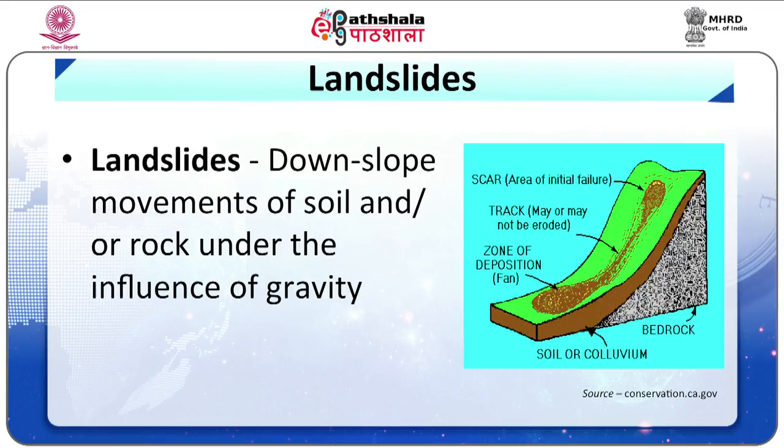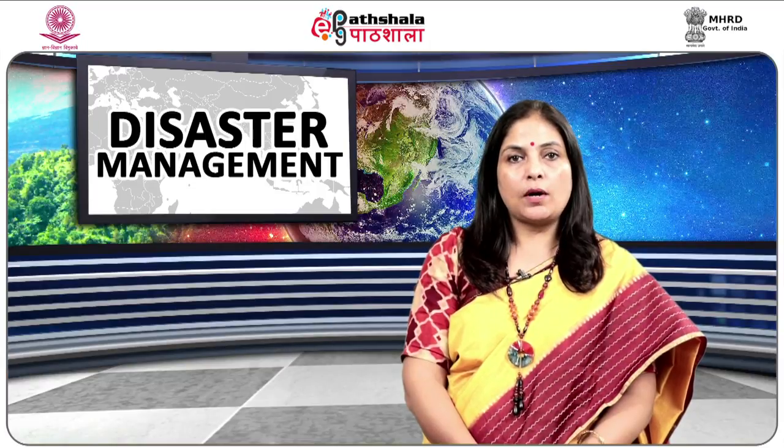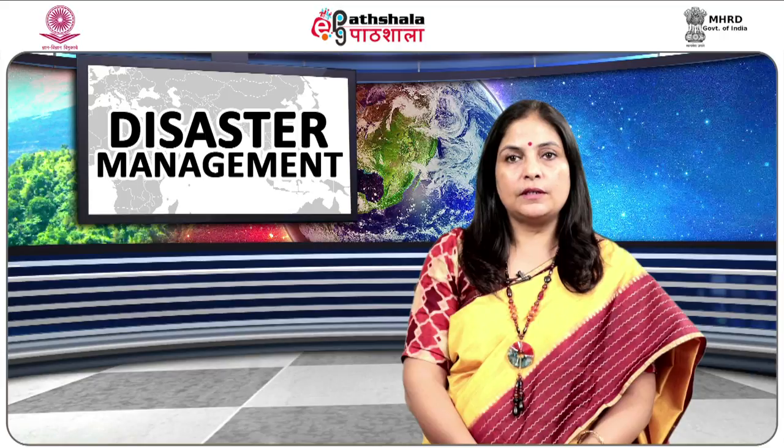The term landslides describes downslope and outward movement of soil or rock under the influence of gravity. While many landslides do occur through the process of rock or soil sliding on a distinct surface, this is not necessarily the case. There is a wide variety of types of movement that includes falling, sliding and flowing. The type of movement depends upon the angle of the slope, the nature of the material, and the various stresses that act upon them.